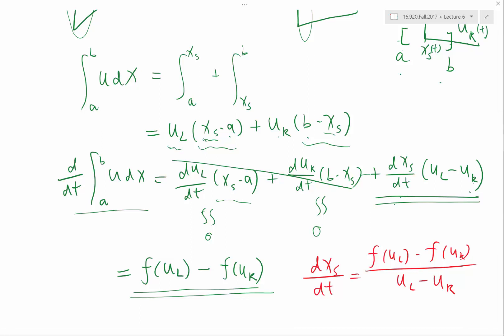It's the ratio between the difference of the fluxes and the difference between the values. This is general for any conservation law.